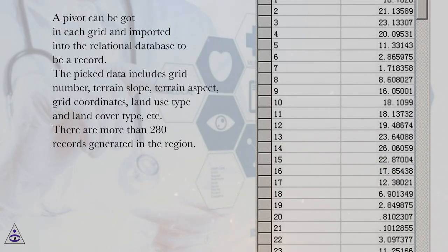The picked data includes grid number, terrain slope, terrain aspect, grid coordinates, land use type and land cover type, etc. There are more than 280 records generated in the region.